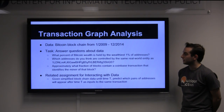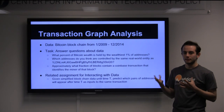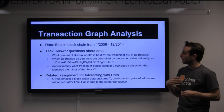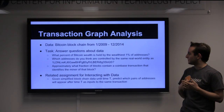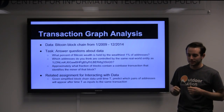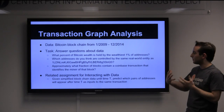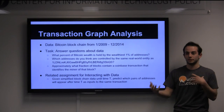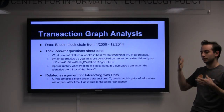Assignment five is not a development assignment in the same sense — it's more of a data analysis assignment called transaction graph analysis. Students are given the blockchain — the entire blockchain, cut off at some point — and the task is to use this data to answer various questions. Examples include: What percent of Bitcoin wealth is held by the wealthiest 1% of addresses? Which addresses do you think are controlled by the same real-world entity as some given address? Approximately what fraction of blocks contain a Coinbase transaction that identifies the miner? The second question can be analyzed using clustering algorithms similar to those discussed in the Fistful of Bitcoins paper. We've composed a list of maybe 20 or so questions and are still coming up with more.